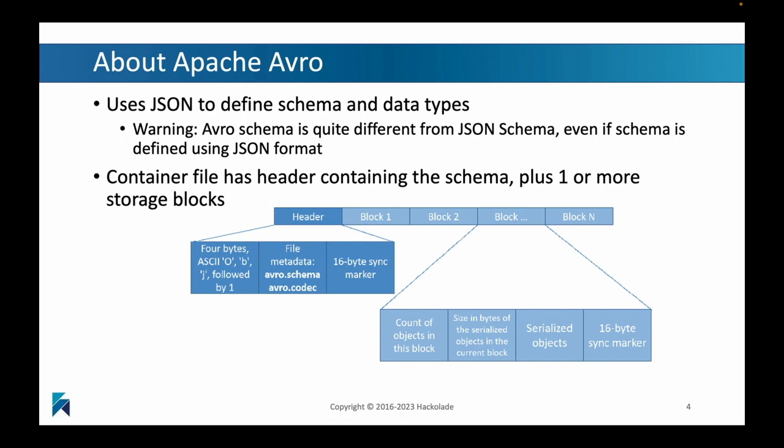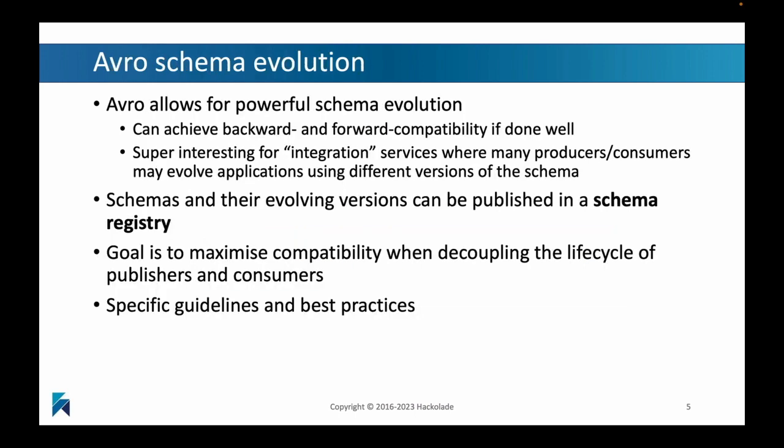Avro uses JSON to define the schema and the data types, but it's a little bit different from what the JSON schema typically provides, even though the Avro schema is actually defined using a JSON format. You will see that the container file has a header that contains the schema, plus one or more storage blocks. You can see the composition and structure of these files in the overview graphic here on this slide.